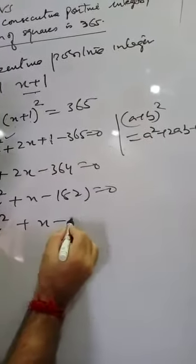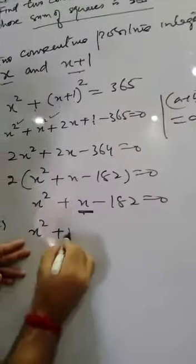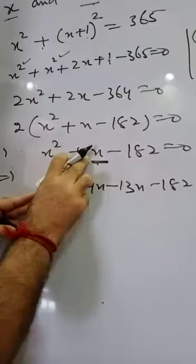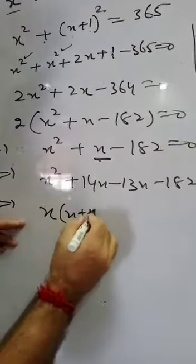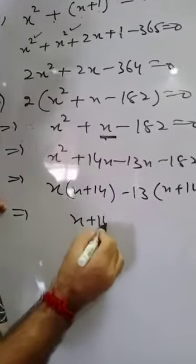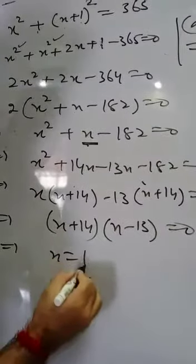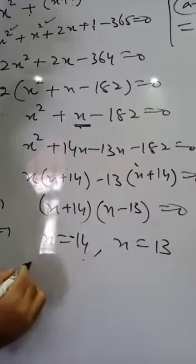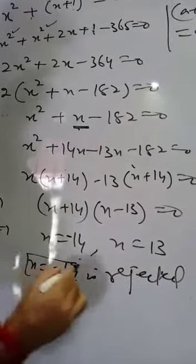The quadratic equation is x squared plus x minus 182 equals 0. Splitting the middle term: x squared plus 14x minus 13x minus 182, because 14 times 13 equals 182 and 14 minus 13 equals 1. Grouping: x common gives (x plus 14), and 13 common gives (x plus 14), so (x plus 14)(x minus 13) equals 0. Therefore x equals 13 or x equals minus 14. Since x equals minus 14 is negative, it is rejected.